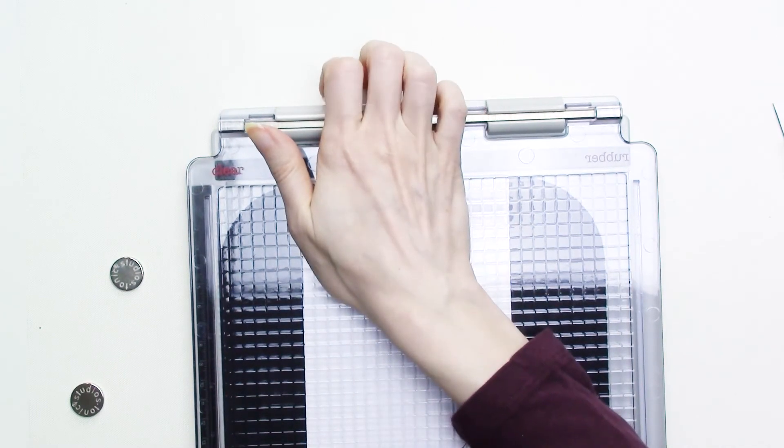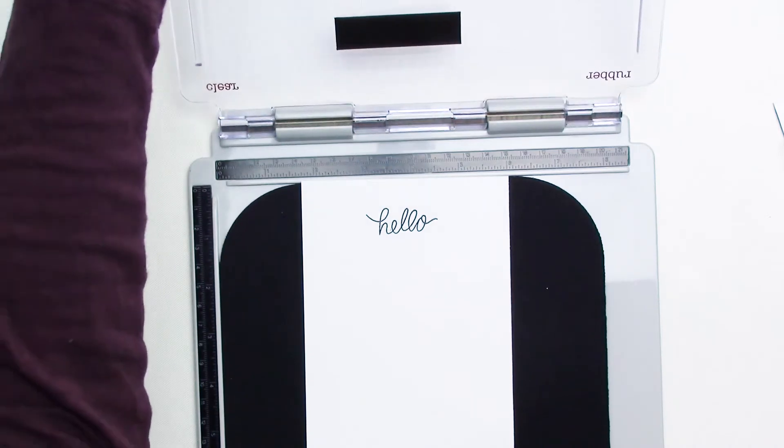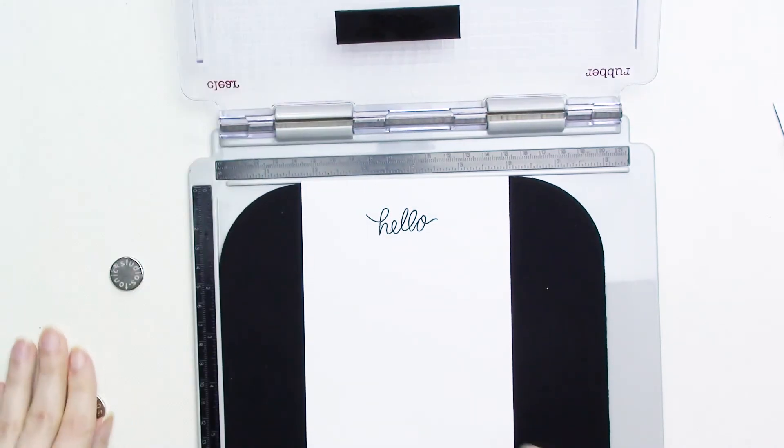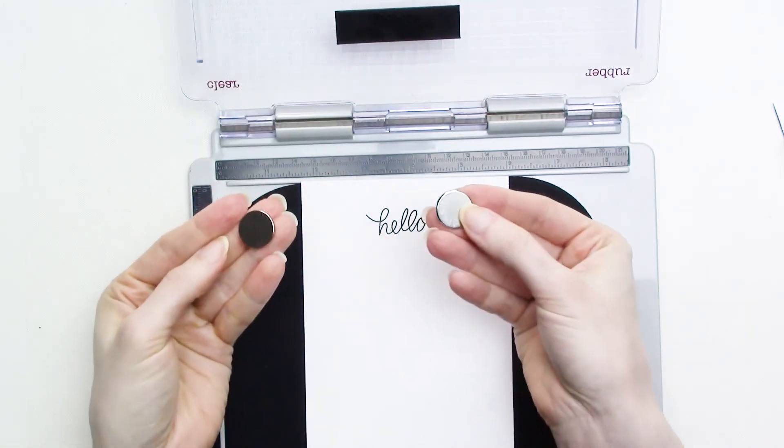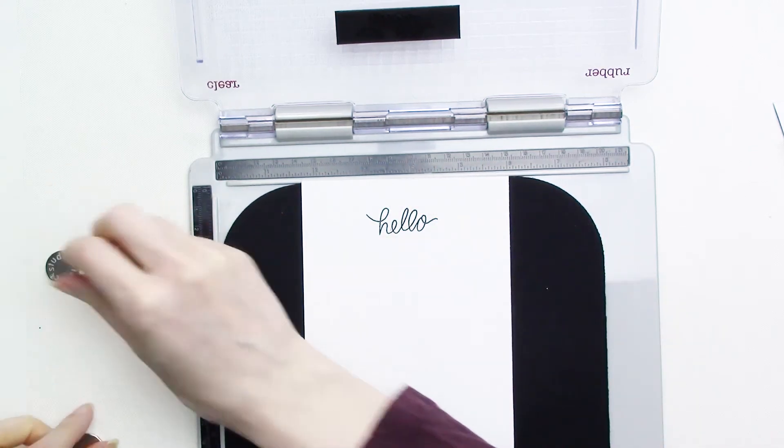If you still want to be able to hold the cardstock in place without the magnets, you can add a piece of the removable double-sided tape to the back of the piece of cardstock, just like I added it to the back of the stamp sheet. You can see that, now that the magnets are removed, I'm getting a much more saturated impression.